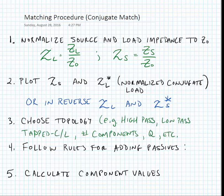From there we simply follow the rules for adding passives. We start at our source impedance and we add passives in order to try and connect a line between our source impedance and the complex conjugate of our load impedance. Once we've made the connection, we can calculate component values by reading the normalized values from the chart and unnormalizing them.